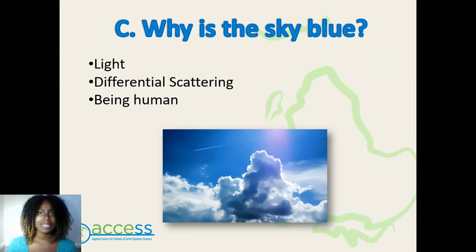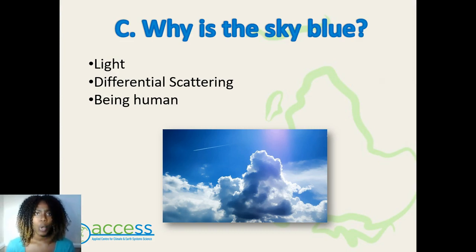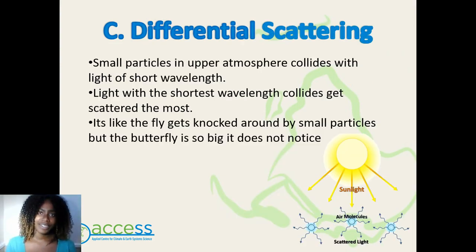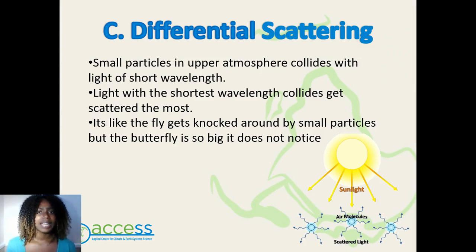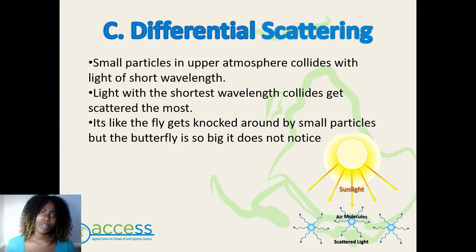For us to understand why the sky is blue, we need to consider a couple of factors: one, the nature of light; two, differential scattering; and three, our human eyes. We've already seen that light for the purpose of this workshop is a wave, and thus it can exhibit long and short wavelengths. Differential scattering occurs when small particles in the upper atmosphere collide with light that has short wavelengths. This occurs because gravity holds all the big particles at the bottom of the atmosphere. Light with a short wavelength gets scattered the most during collision, and most of the short wave radiation is scattered in the upper atmosphere more than the long wave radiation.